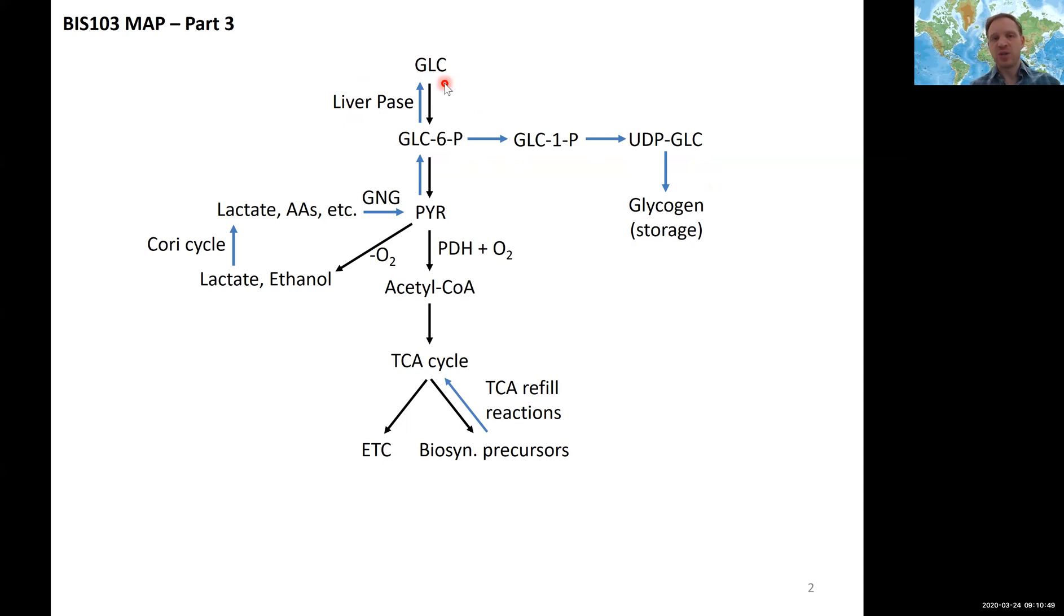And then we had touched on the Cori cycle where we had looked at how we can combine using some of these presumably waste products such as lactate coming out of our fermentation pathways and how can we then cycle them back into the bloodstream going into GNG to regenerate sugar for our system. So this is where we stood at the end of the last lectures.